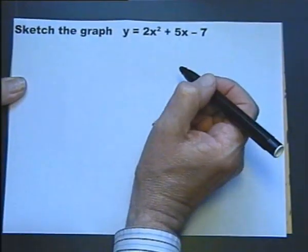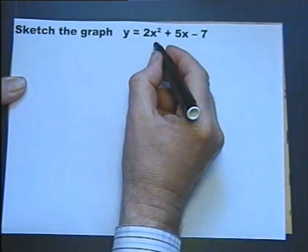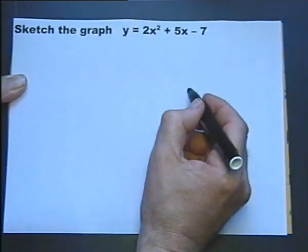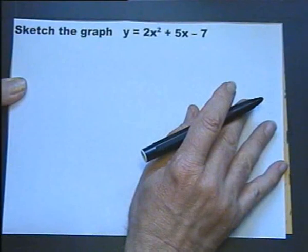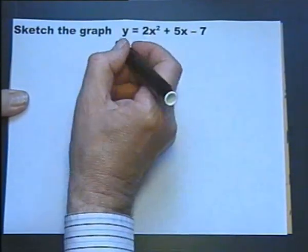However, what about the minimum point? We know it goes like that. What's the coordinates of the minimum point? Well, we can use calculus to work that out. Let's differentiate it.